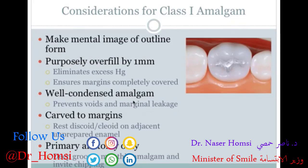Condense the amalgam really well to prevent voids and marginal leakage. Carve to the margins of your outline form — you can use a discoid-cleoid instrument resting on adjacent unprepared enamel and slowly scrape away material until it matches the tooth. Carving in primary anatomy is fine, but deep grooves and secondary accessory grooves are not recommended as they may unnecessarily thin the amalgam and invite chipping and fracture.